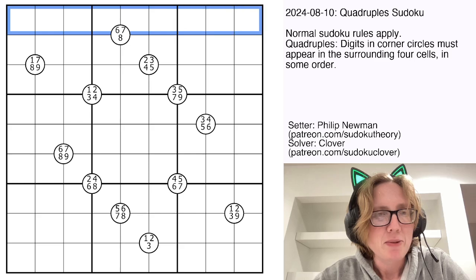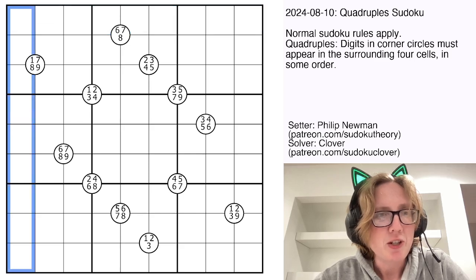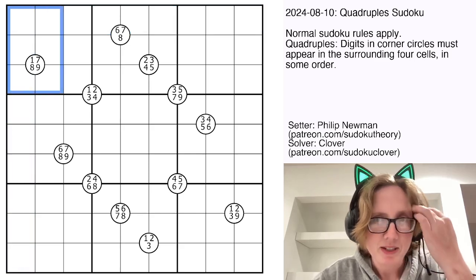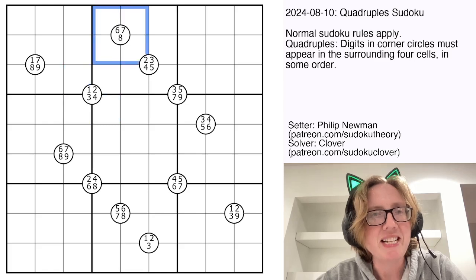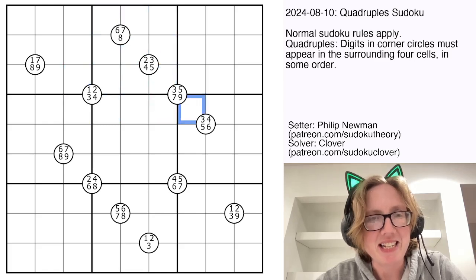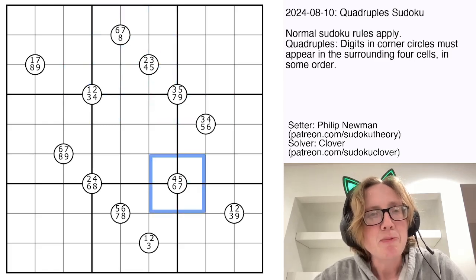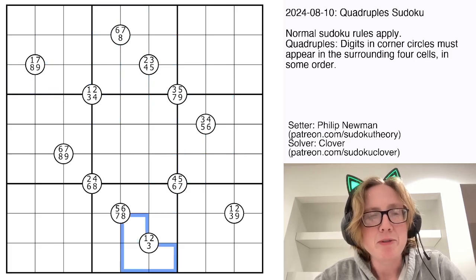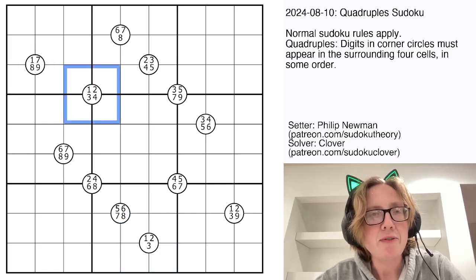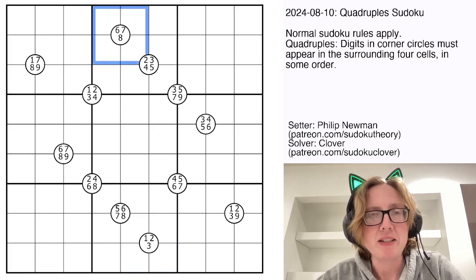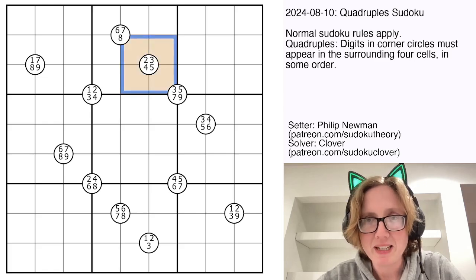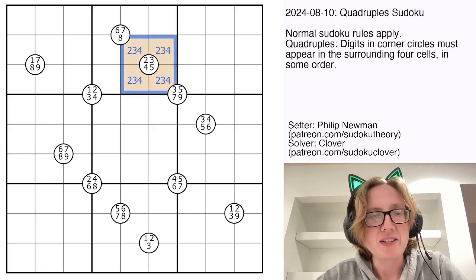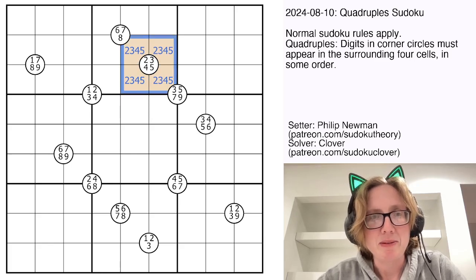So we have normal sudoku rules. It's placing the digits one through nine once each in each row, each column, and each outlined three by three region. And then also we have some of these white circles in the grid, very aesthetically spare grid today. I like that. These white circles each have four or sometimes three numbers written in them, and those numbers tell you digits that have to appear somewhere in the four cells that immediately surround that circle. So for example, this one here says two, three, four, five. So those four cells have to contain the digits two, three, four, five. So let's keep going from there.